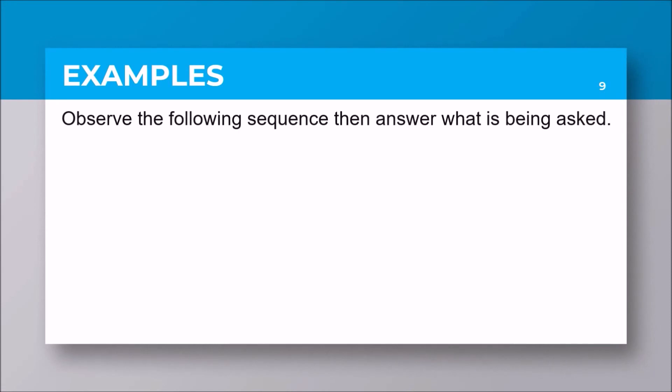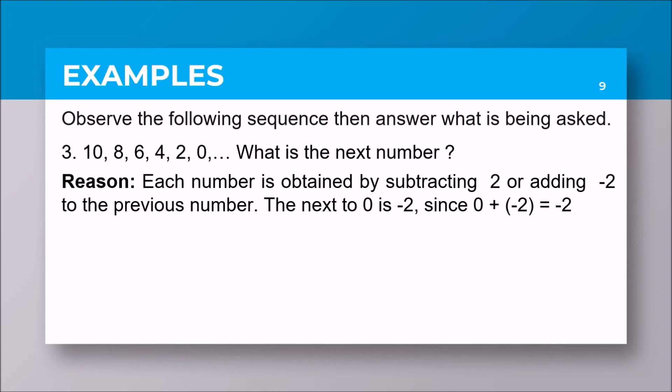Let us consider number three: 10, 8, 6, 4, 2, 0. What is the next number? Notice that each number is subtracting 2 from the previous number, or we could say adding negative 2 to the previous number. Since the last number here is 0, so 0 plus negative 2, the answer is negative 2.